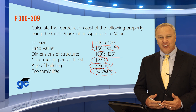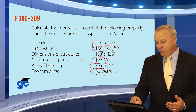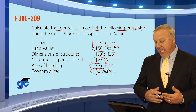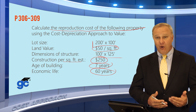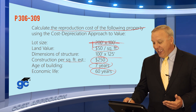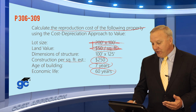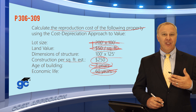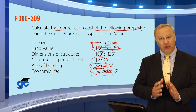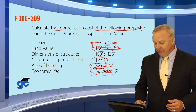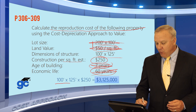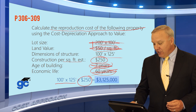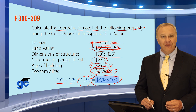The question asks you to calculate the reproduction cost. To do that, we only need the dimensions of the structure and the cost per square foot. We don't care how big the lot is, what the land value is, how old the building is, or what the economic life is — those are used for the overall value calculation, but not for this question. The structure is 100 by 125; multiply that and then multiply by $250 per square foot, and the cost to reproduce this building is $3,125,000.